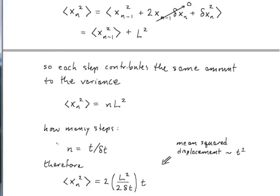So now how many steps did we actually take? Well, the number of steps is the total time elapsed divided by the time interval per step, and therefore we can write down this formula that tells us that xn squared equals 2 times L squared over 2 delta t times t, and so we identify this quantity in parentheses as our diffusivity in one dimension. So if the steps are L squared and the time interval between steps is delta t, then we would write down the diffusivity as L squared over 2 delta t.